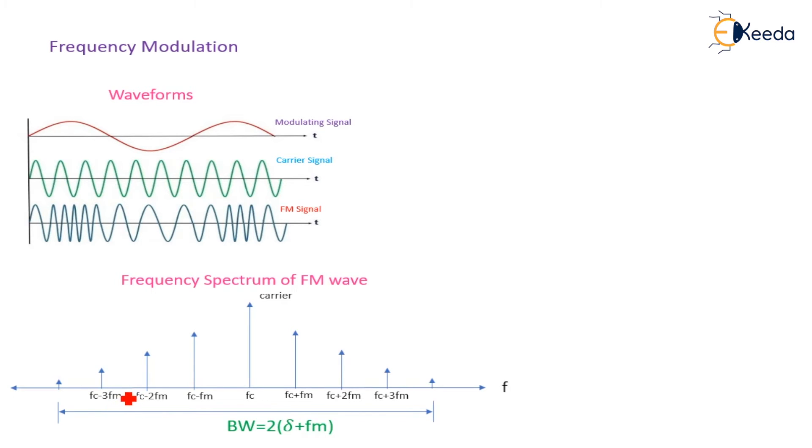Hence, in FM wave, the bandwidth becomes very large. The formula for this bandwidth equals 2 times delta plus Fm. Here, delta is the deviation into the frequency.